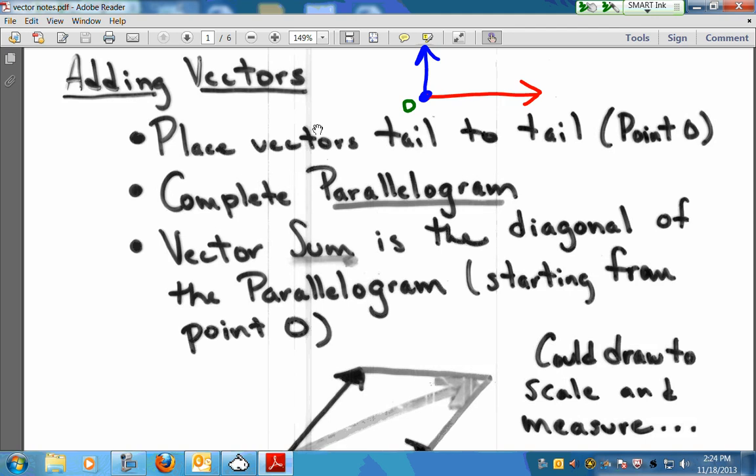Alright, next step. We're going to finish off the parallelogram. And if you look at my two vectors right now, they look like two sides of a rectangle. The rectangle is a parallelogram. So we're going to finish that off. Make our little parallelogram here. The vector sum is the diagonal of that parallelogram starting from our point O. So if you go from point O across the diagonal like this, that green arrow represents the vector sum of those two original vectors.